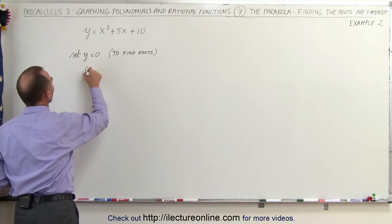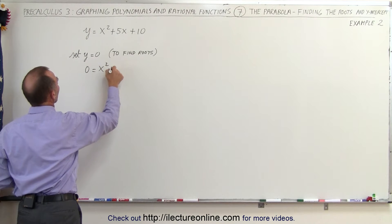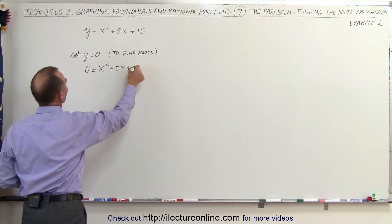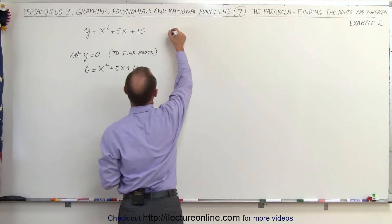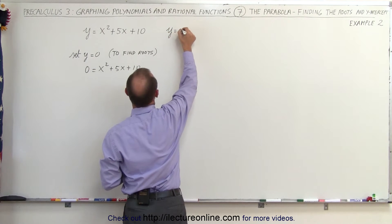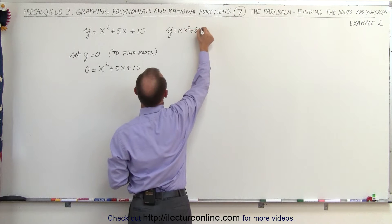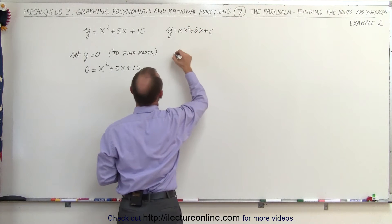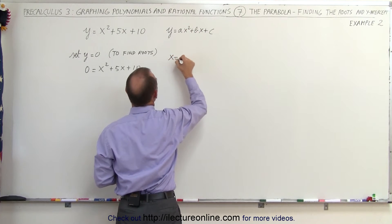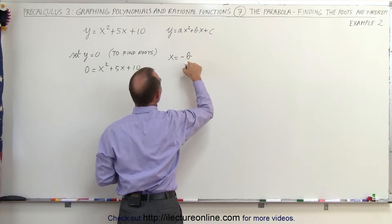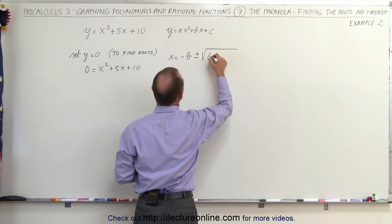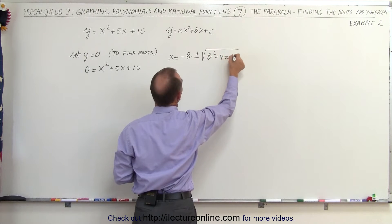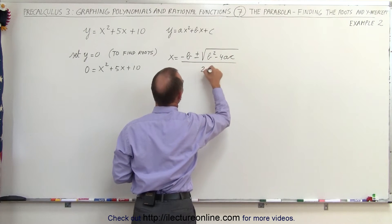Okay, when we do that we end up with 0 equals x squared plus 5x plus 10. If we write down the general formula of the equation, we have y is equal to ax squared plus bx plus c, and we know that x can be found by taking the negative b plus or minus the square root of b squared minus 4 times a times c, all divided by 2a.